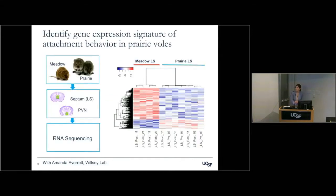We go back to our comparative approach, taking the prairie voles that are monogamous and comparing to the promiscuous species, looking at pair bonding where we know dramatic behavioral changes occur between these species. We pair-bond these animals and then take tissue from two regions to start — the PVN, where we know the oxytocin signal originates, and the lateral septum, where we found the robust differential response. We take tissue, send the RNA, and get the transcriptional profile.